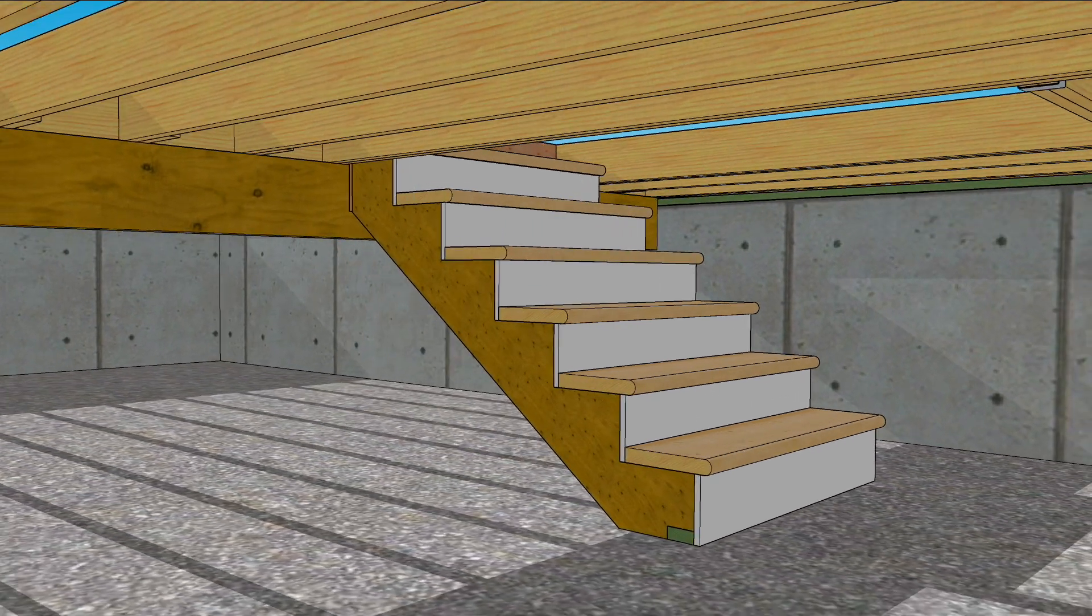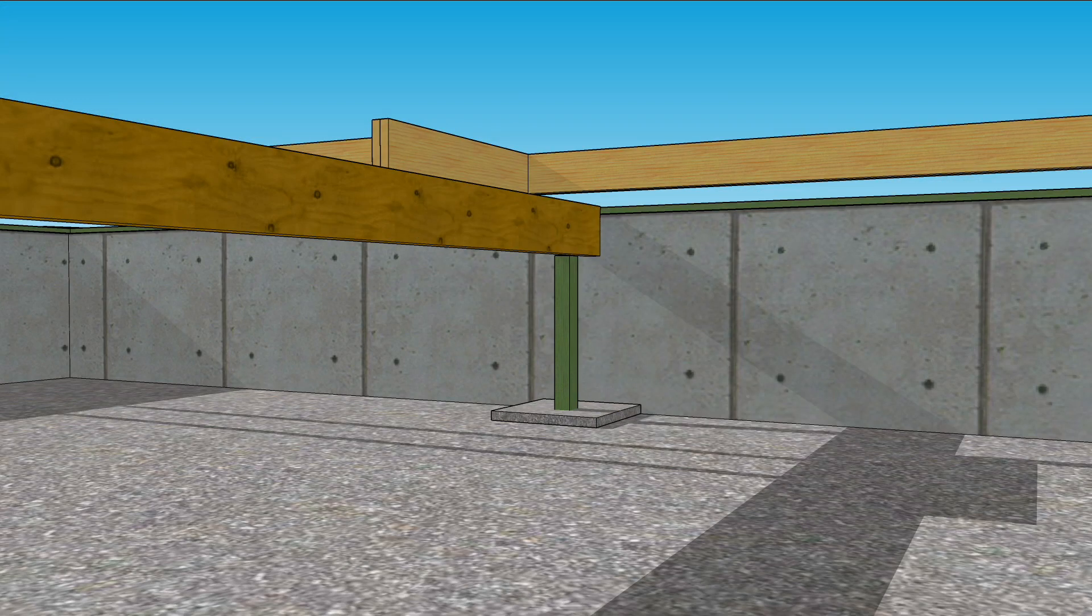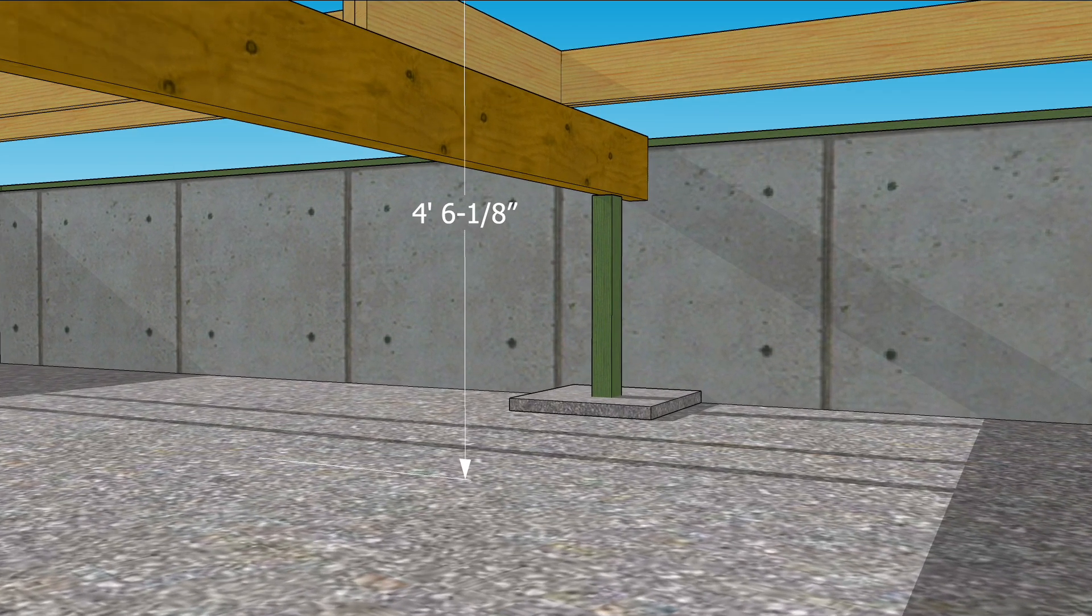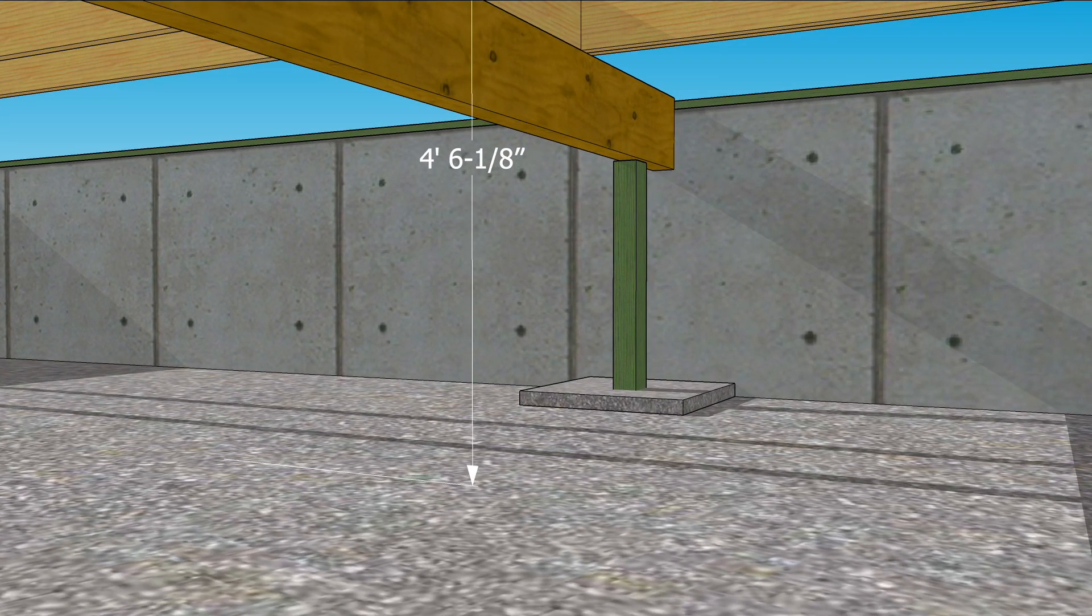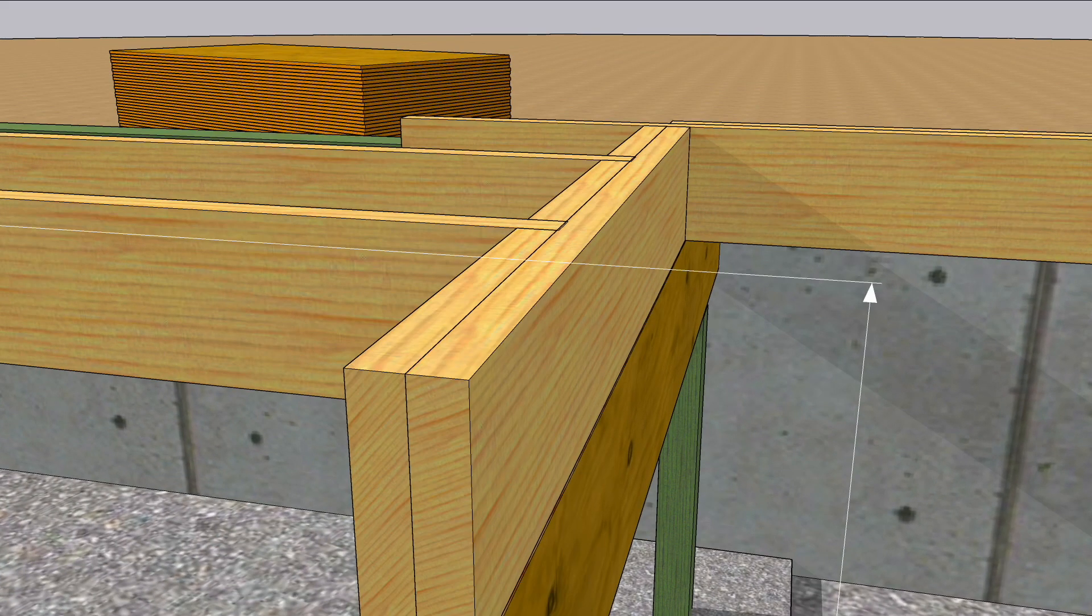First, we'll strip back some of the framing so we can see what we're doing. The stairs must extend from the top of the finished floor below to the top of the finished floor above. Because the finished floor isn't installed yet, we must know what it'll be, or at least what its thickness will be.